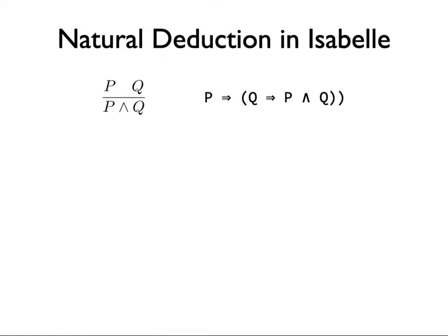The inference rule with P and Q above the line and P∧Q below is a typical introduction rule for conjunction. On the right-hand side you see the Isabelle version — all I've done is use those fat arrows to replace the vertical bar. There's actually a little more going on, but I don't want to get into the details.